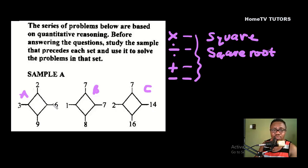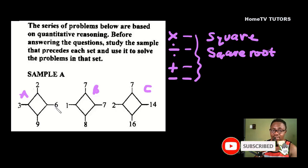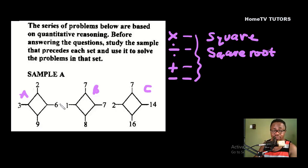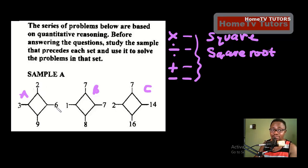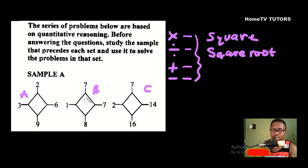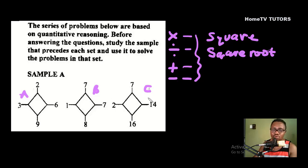In Set C, 7 times 2 gives us 14. Then how do we get the number at the bottom — the 9? If we add three plus six, that gives us 9. Let's test it in the other sets. Set B: 1 plus 7 gives us 8. Set C: 2 plus 14 gives us 16. If we don't know the number at the top, we can divide: 3 divides 6 to give 2, or 1 divides 7 to give 7, and 2 divides 14 to give 7.